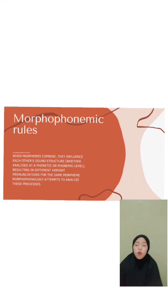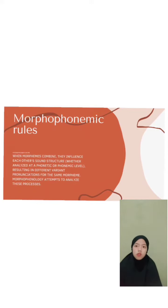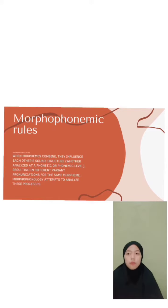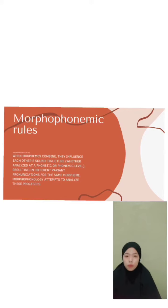The last is morphophonemic rules. When morphemes combine, they influence each other's sound structure, whether analyzed at the phonetic or phonemic level, resulting in different variant pronunciations for the same morpheme. Morphophonology attempts to analyze this process.